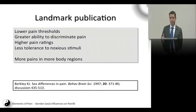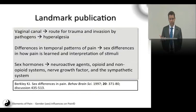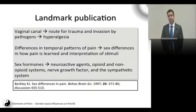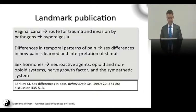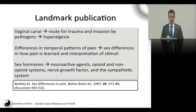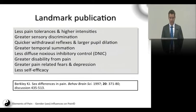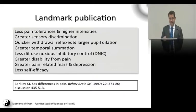Females also get more pain in more parts of the body. Berkley proposed three reasons: first, the vaginal canal as a route for trauma and pathogen invasion, setting up hyperalgesia; second, differences in temporal patterns of pain through the menstrual cycle, which may change how females learn and interpret painful stimuli; and third, sex hormones having various effects comparing males and females with respect to neuroactive agents, opioid and non-opioid systems, nerve growth factors, and the sympathetic system.